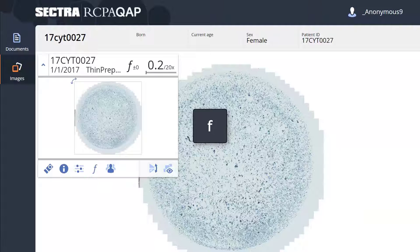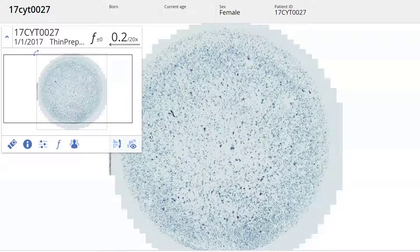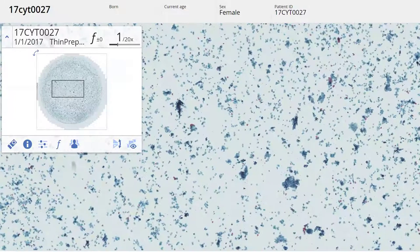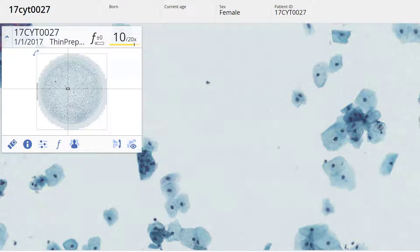First, I press F to make the slide full screen. To zoom in, I use the keyboard shortcut Page Up, meaning close up, to move through the objective magnifications to 10 times the screening magnification.